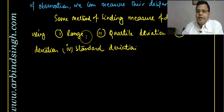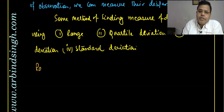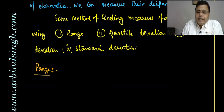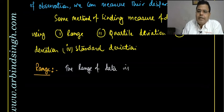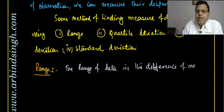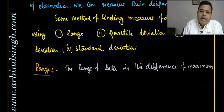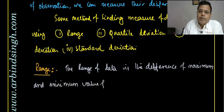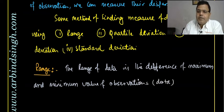So first — Range. What is Range? The range of data is the difference of the maximum and minimum value of the observations in the data.